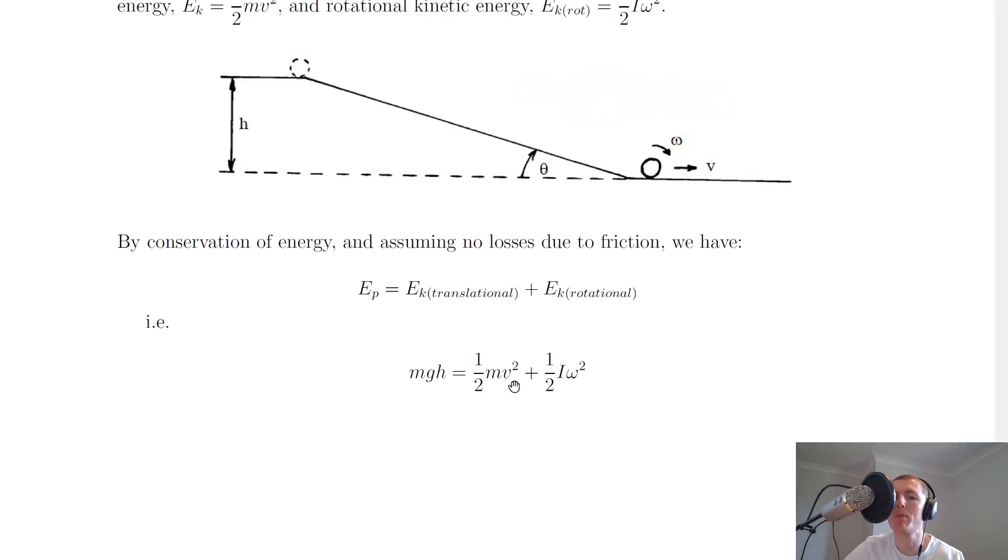So when you're doing a problem like this, it might be useful to remember that v = rω, because that is your link between linear and angular velocity.